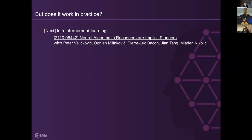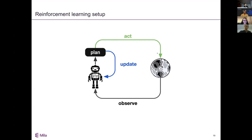I'll take over from here. LP made some super interesting points about the benefits of algorithms, benefits of neural networks, and benefits of combining them — looking at how to learn multiple algorithms, and how to learn one algorithm without much intermediate information. Here I'll talk about how we can use learning to simulate algorithms in practice — specifically in reinforcement learning. This was done with collaborators Petar, Obnien, Pierre-Luc, Jan, and Mladen. Don't worry if you don't know much about RL — I'll introduce it from basic points.